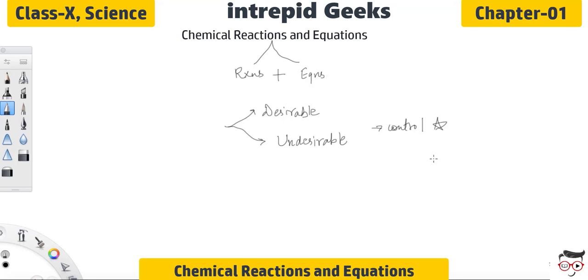That is why we are studying the reactions so that we can control the reactions. This is an important point. So in order to control the reactions we are studying them in detail. Let us take the first example which is given in your NCERT also, that is the burning of magnesium ribbon. So the burning of magnesium ribbon is a very famous example. There are some important points related to the burning of magnesium ribbon.